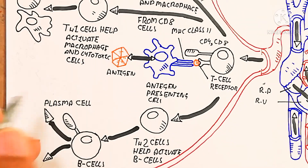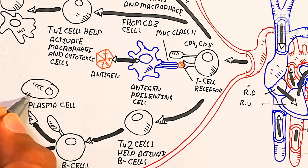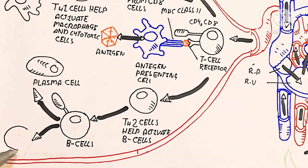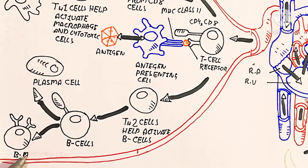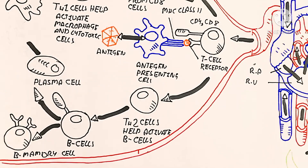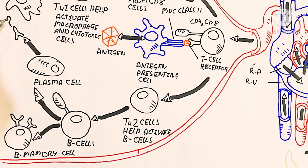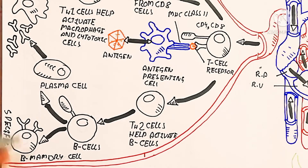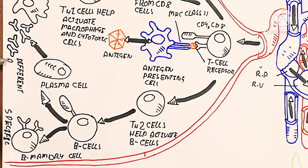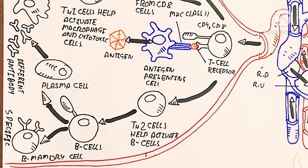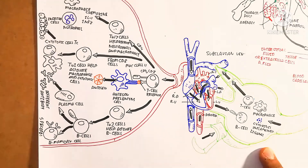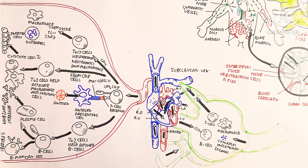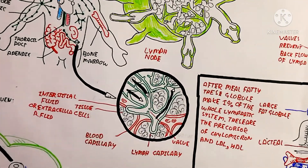TH2 cells convert from T cells and recruit B cells. B cells convert into B memory cells and plasma cells. B memory cells memorize the antigen and mount a quick response upon re-infection, while plasma cells produce different types of antibodies depending on the type and timing of infection. B memory cells are specialized to produce antigen-specific antibodies. Thanks for watching — please subscribe to the channel.